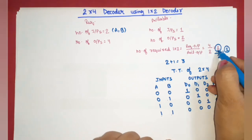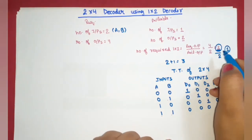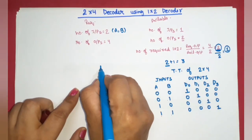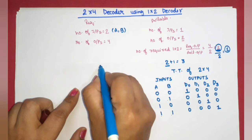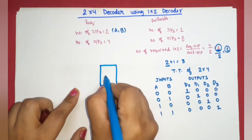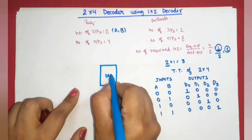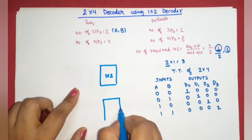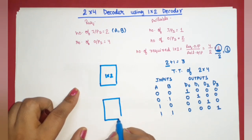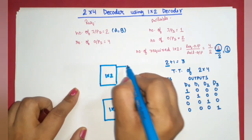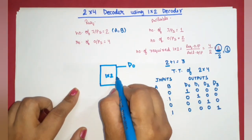On the second level we will use two one-to-two decoders. The first one-to-two decoder produces outputs D0 and D1, and the second one-to-two decoder produces outputs D2 and D3.